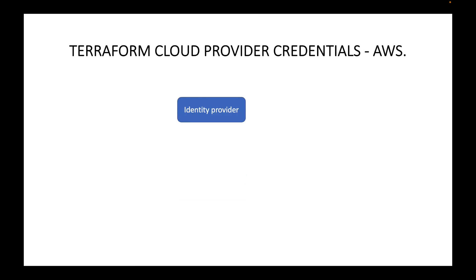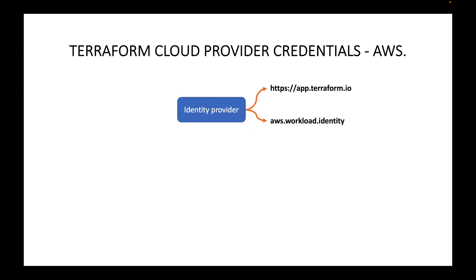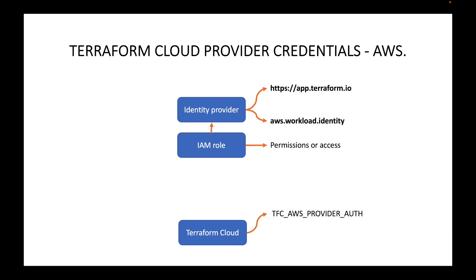To recap: first, create an identity provider with provider URL 'https://app.terraform.io' and audience 'aws.workload.identity'. Then create an IAM role and attach the identity provider to it — both done on the AWS platform. In Terraform Cloud, add two environment variables: 'TFC_AWS_PROVIDER_AUTH' set to 'true', and 'TFC_AWS_RUN_ROLE_ARN' set to the ARN of the IAM role. That's all for this session — thank you, please subscribe and like the video.